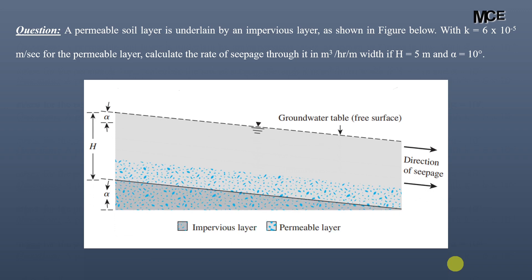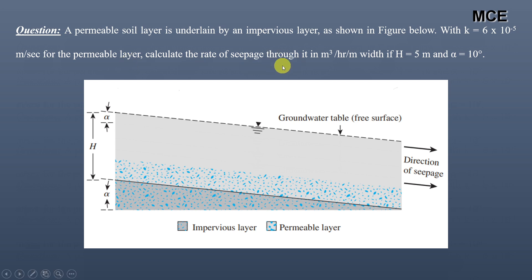Hello and welcome back to Master Civil Engineering. In this video you will learn how to find the rate of seepage in a soil through a permeable layer. A permeable soil layer is underlain by an impervious layer. The coefficient of permeability k equals 6 × 10⁻⁵ m/s. We have to calculate the rate of seepage through the permeable layer in m³/hour per meter width, given h = 5 m and angle of inclination α = 10°.